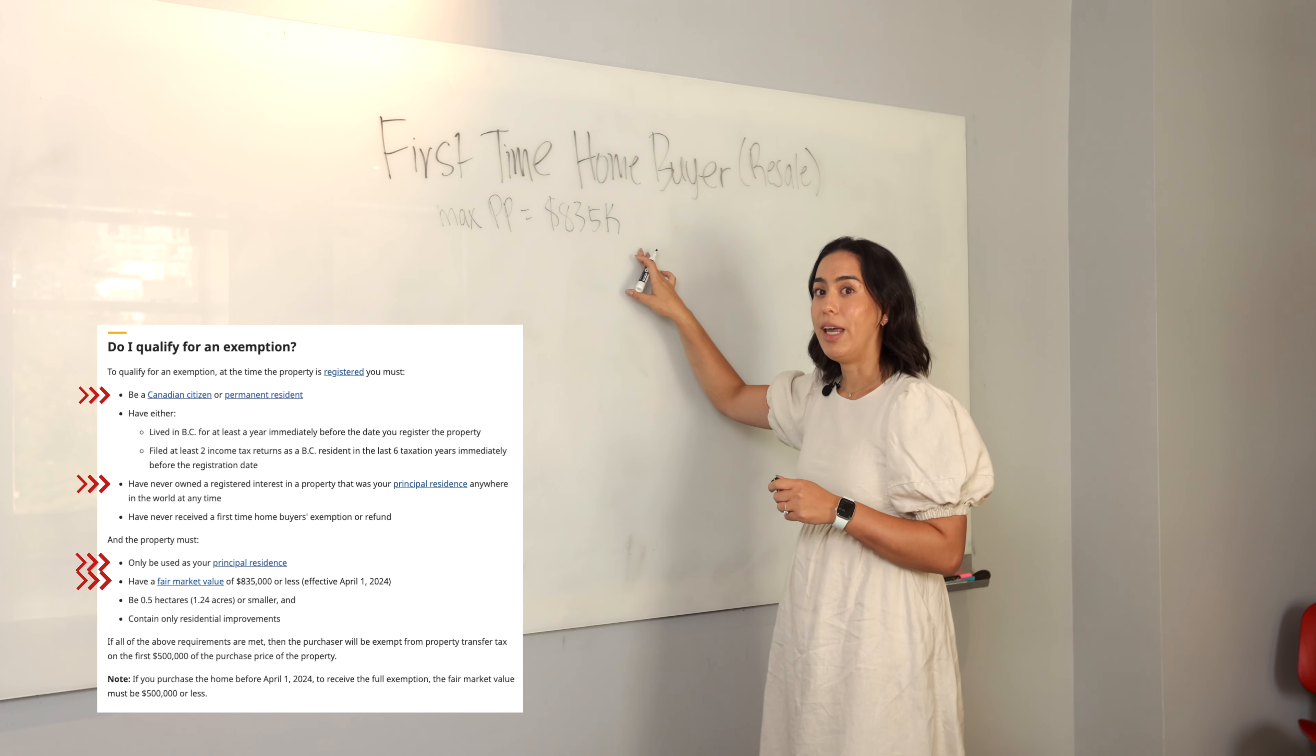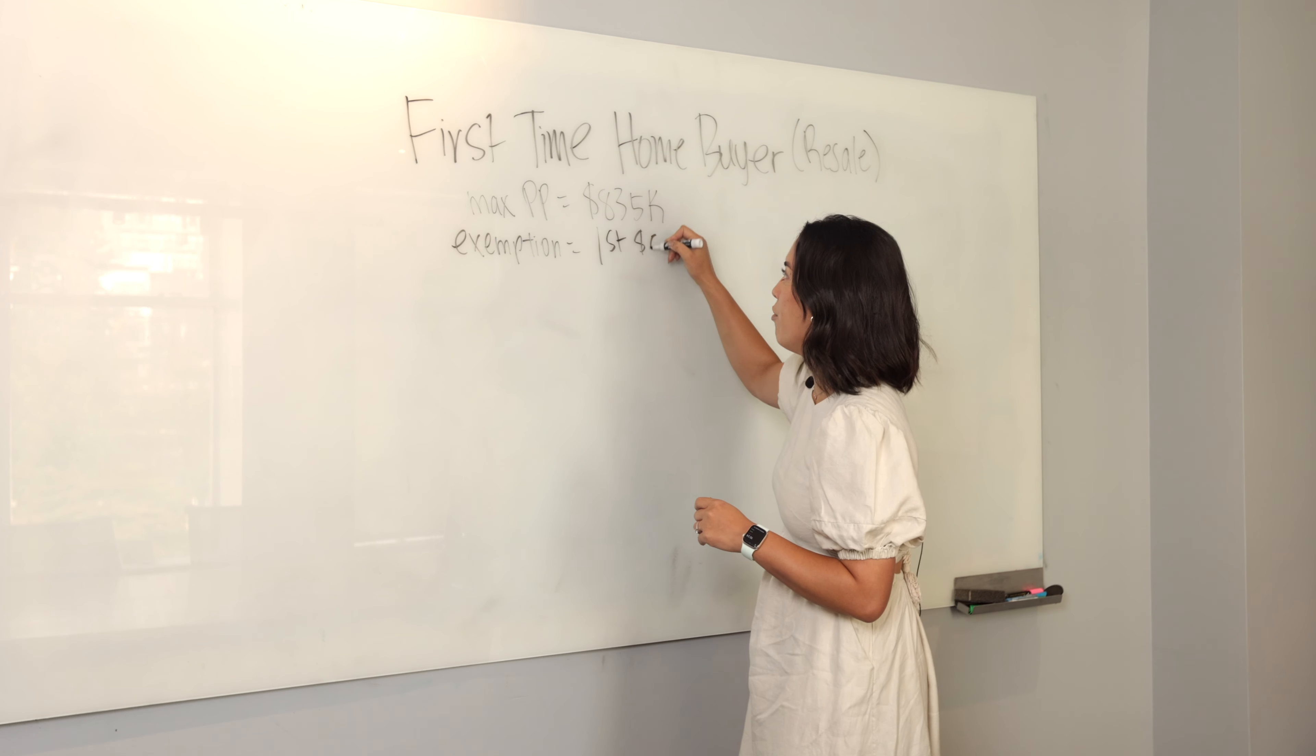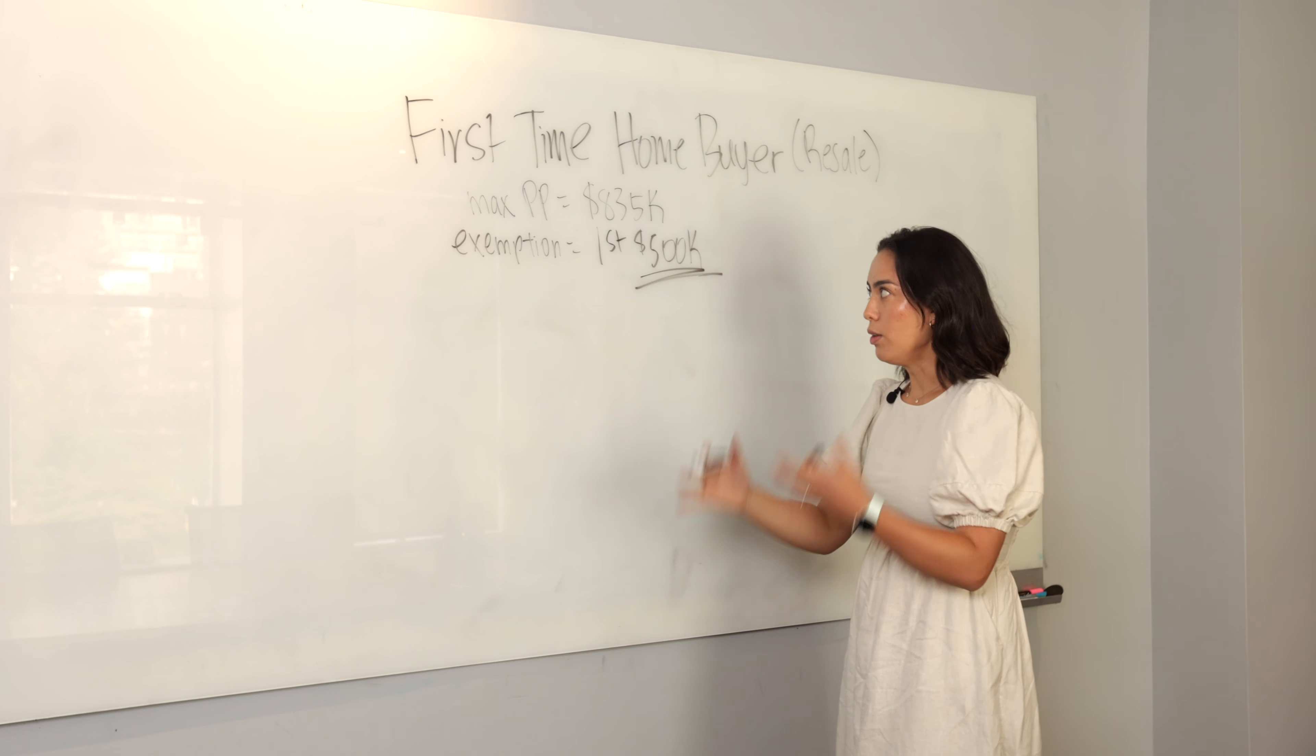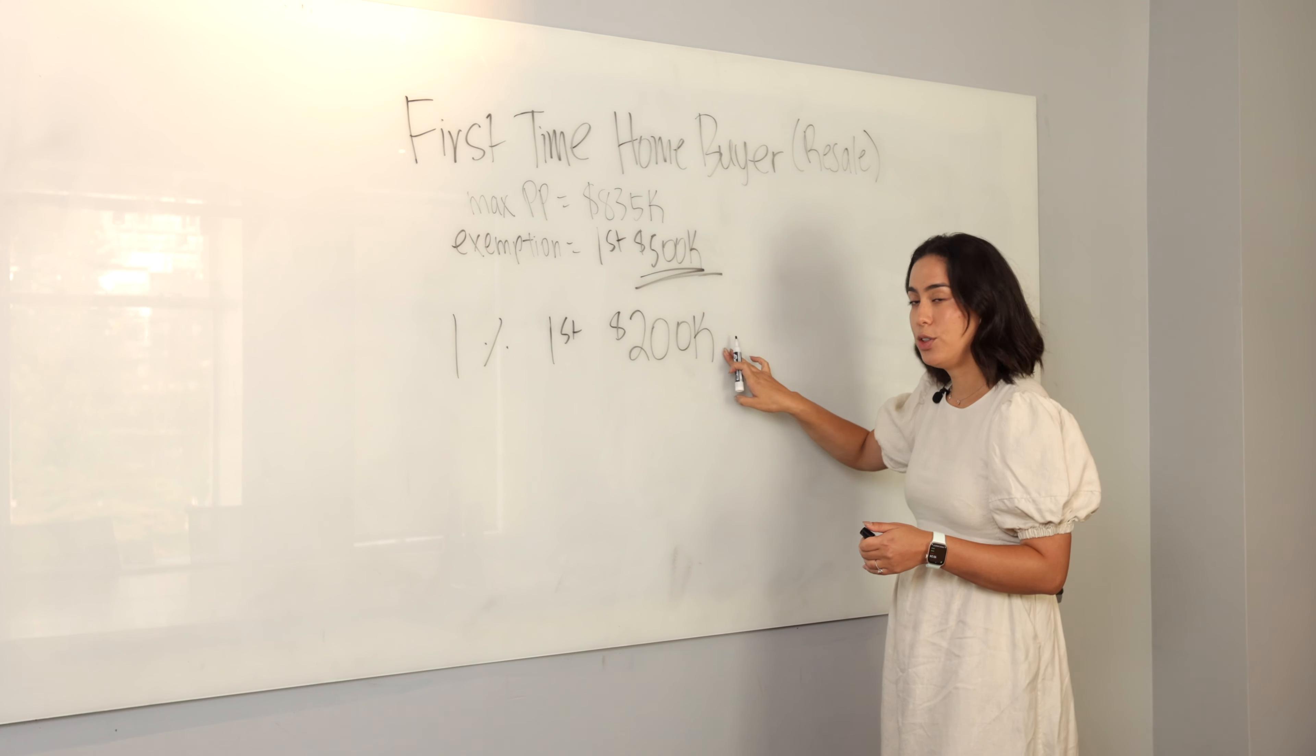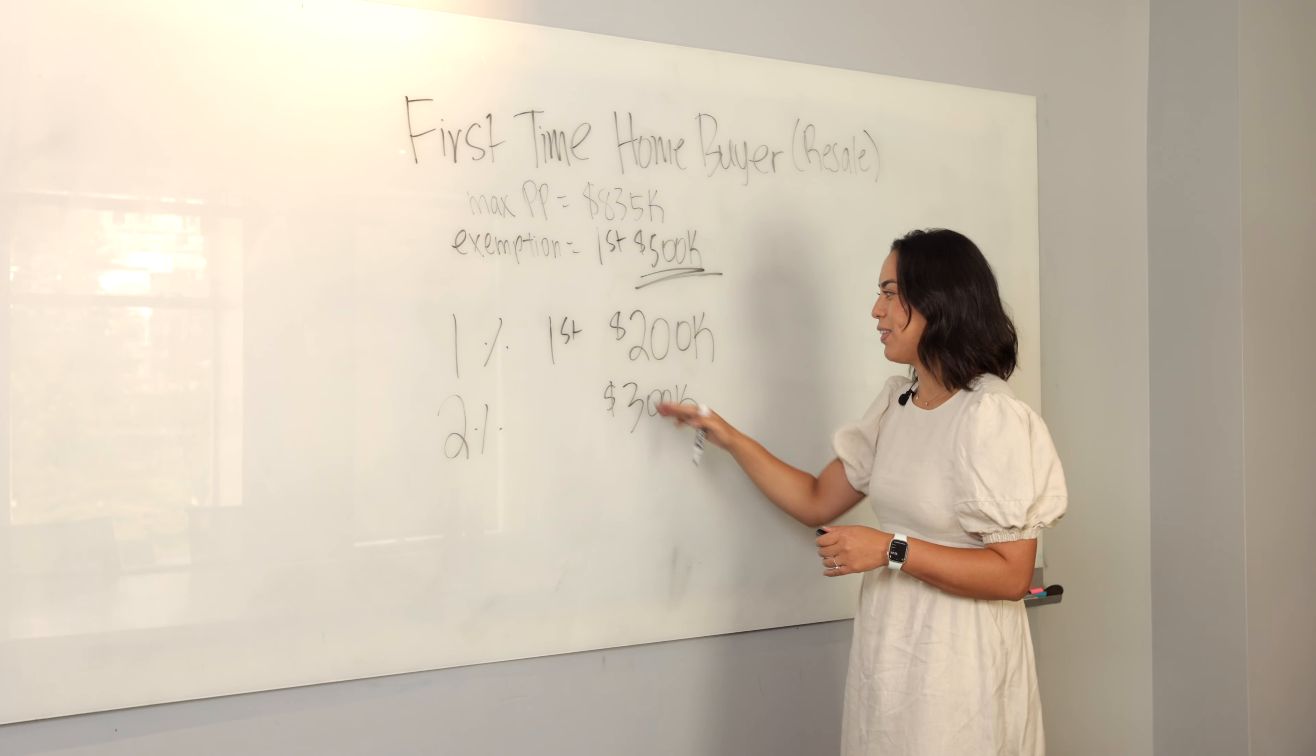But it's not the $835,000 that you're getting the full exemption on. Your exemption is going to be based on the first $500,000. So when we're calculating the property transfer tax exemption, we're using this $500,000 number. We have to go into how we calculate property transfer tax. It's 1% on that first $200,000 amount. So if we're working off $500,000, $500,000 less $200,000 is $300,000 for the remainder, and that is 2% for the calculation between $200,000 to $2 million. That's that $300,000 portion.